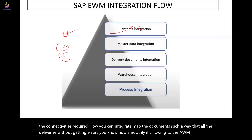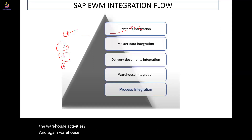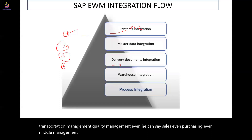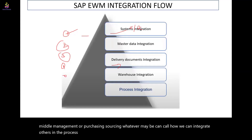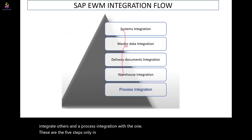The fourth step is warehouse integration — how you are going to integrate other systems such as transportation management, quality management, sales, purchasing, or materials management. The fifth step is process integration with other systems. These are the five steps, and in real-time you use all of them systematically: first system integration, then master data, then delivery, and so on.